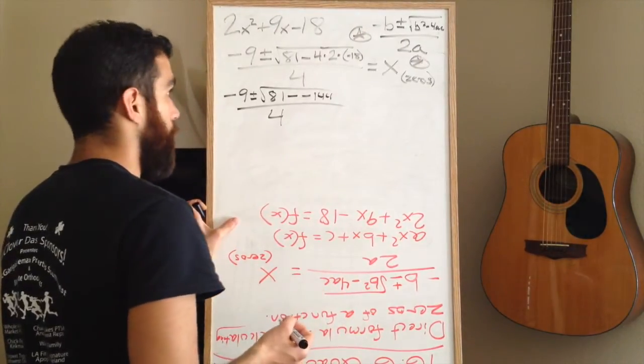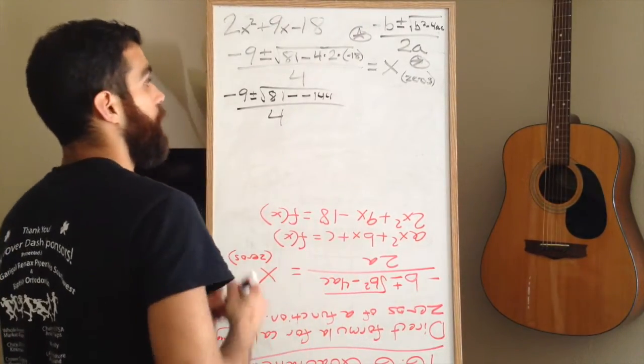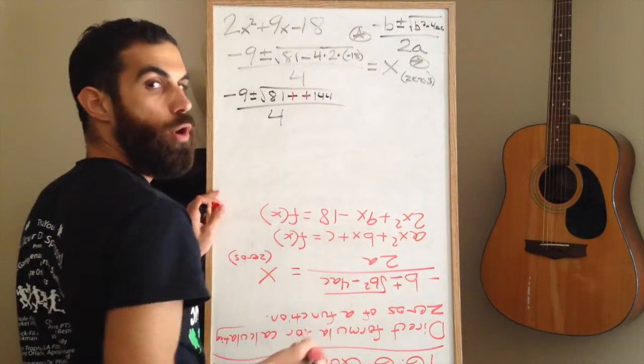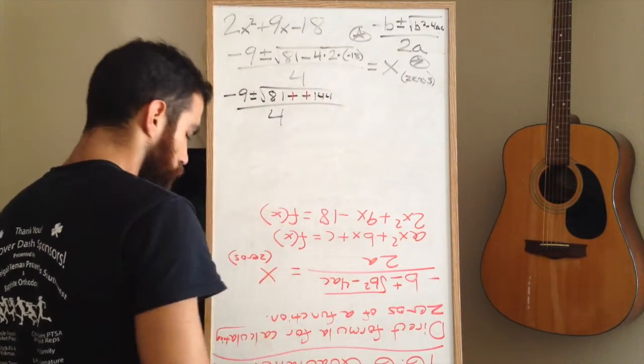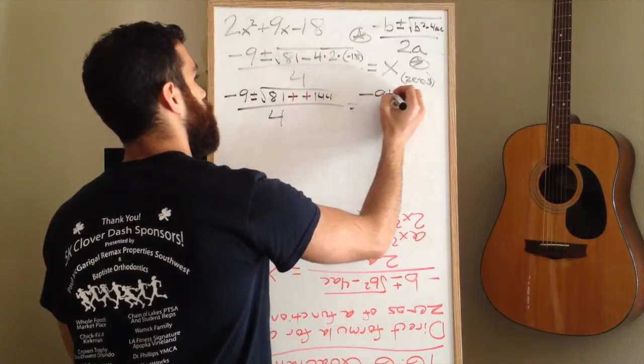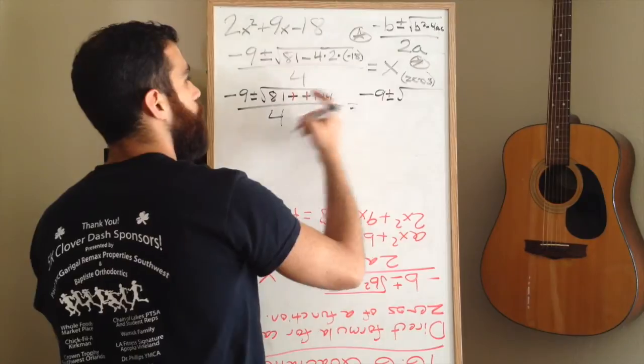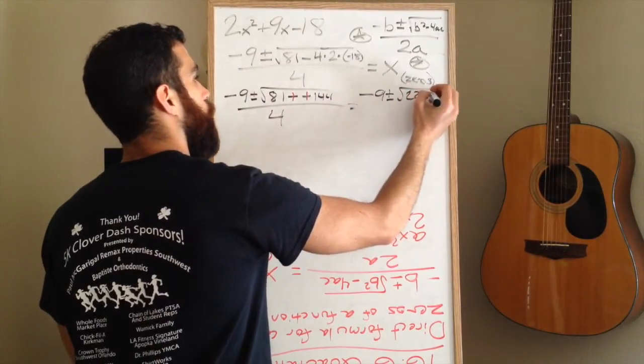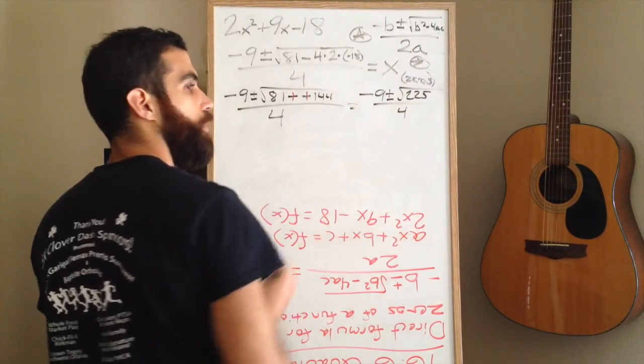Keep simplifying. You have a minus sign next to another minus sign. That's a boom boom. You add. So, rewrite what you have. Negative 9, plus or minus the square root. 81 plus 144 is 225, and all of that is over 4.